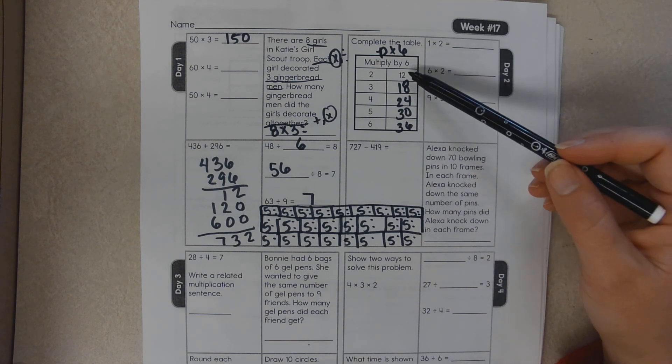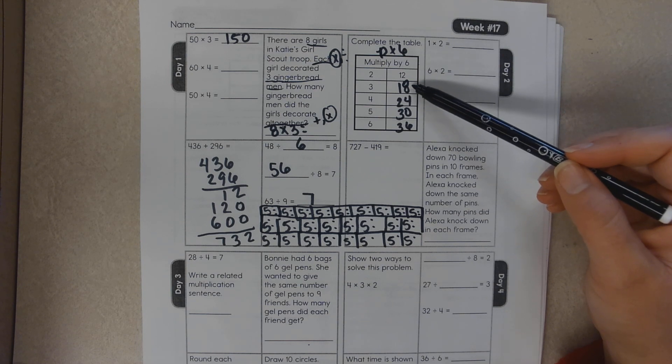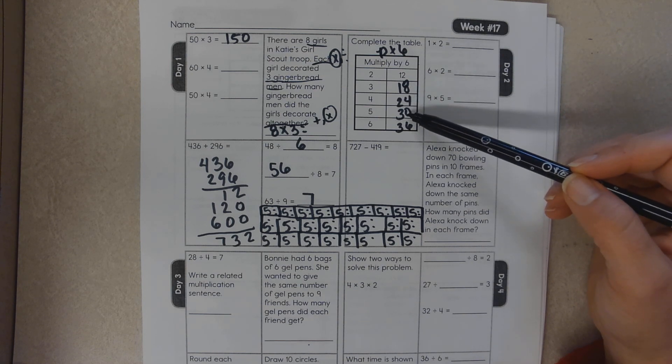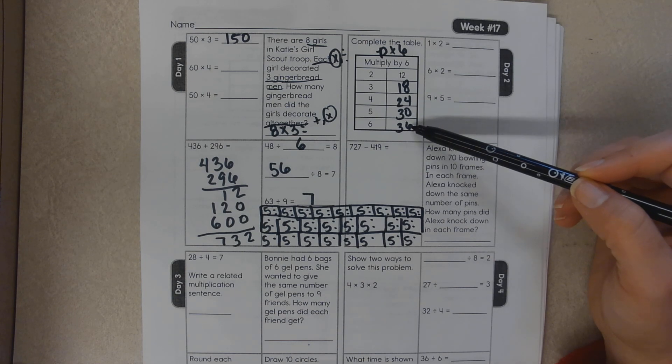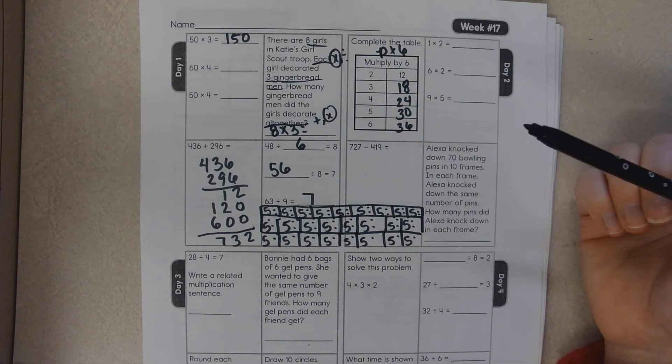36, or you can just add 12 plus 6 equals 18, 18 plus 6 equals 24, 24 plus 6 equals 30, 30 plus 6 equals 36. This is repeated addition.